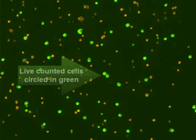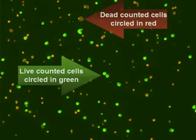Bright field images can be viewed to show cell morphology. A fluorescent image showing green fluorescent live counted cells and red fluorescent dead counted cells can also be viewed.